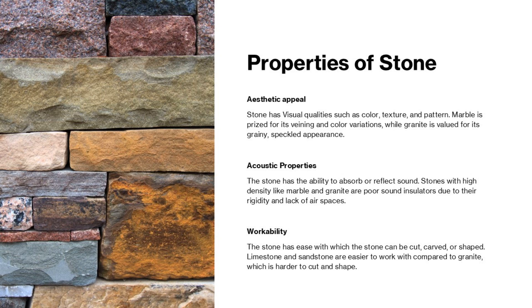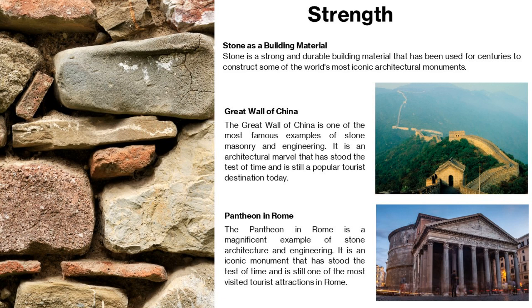Stones with high density like marble and granite are poor sound insulators due to their rigidity and lack of air spaces. Regarding workability, stone can be cut, carved or shaped — limestones and sandstones are easier to work with compared to granite or marble, which are harder to cut and shape. Stone is a strong and durable building material used for centuries to construct iconic architectural monuments like the Great Wall of China and the Pantheon in Rome. The Great Wall of China is one of the most famous examples of stone masonry and engineering, an architectural marvel that has stood the test of time.